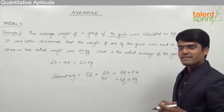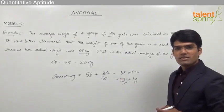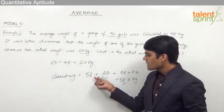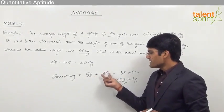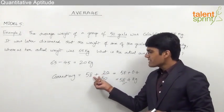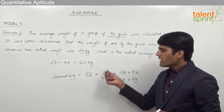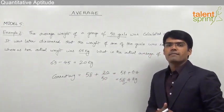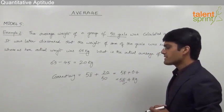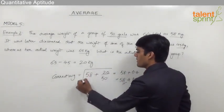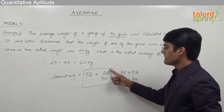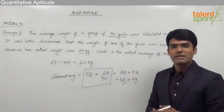This is how you can solve these types of questions by taking: wrong average plus or minus the difference divided by number of elements. Take plus when the correct average should be more, and minus when it should be less. Simply get the answer in one step without writing all the individual steps.